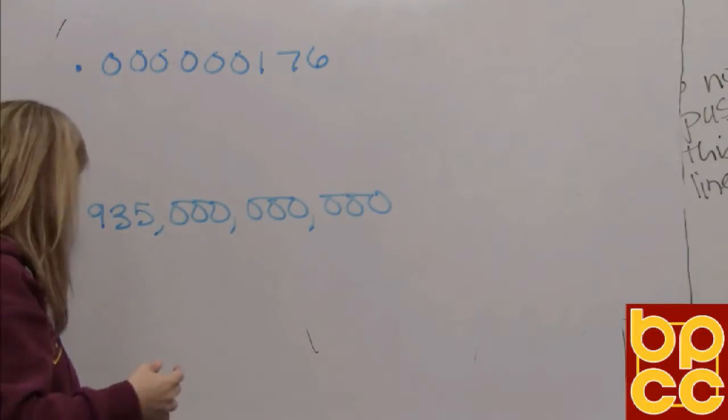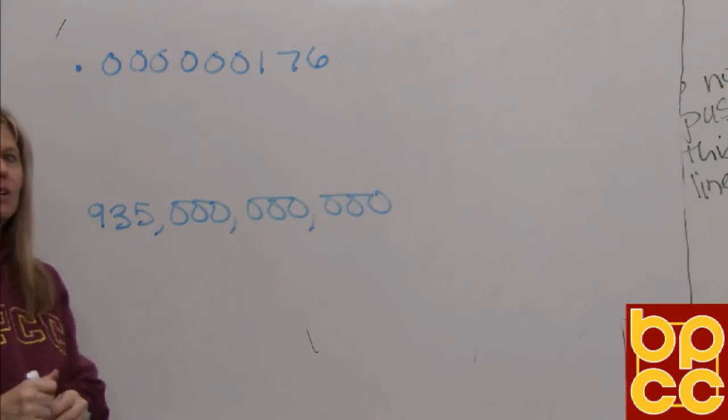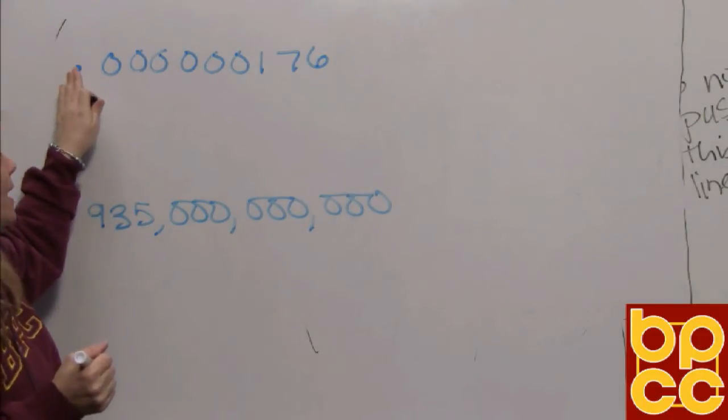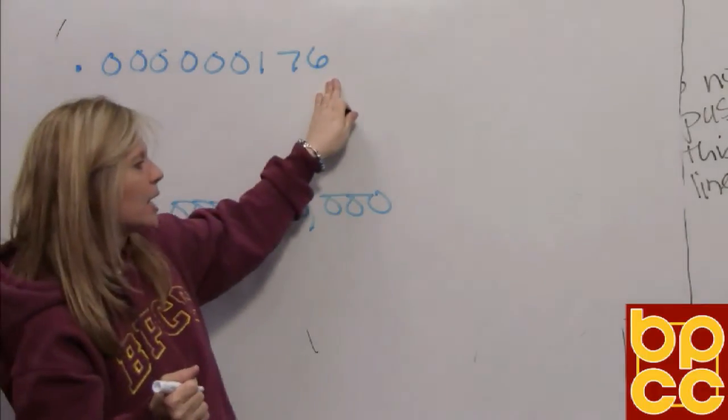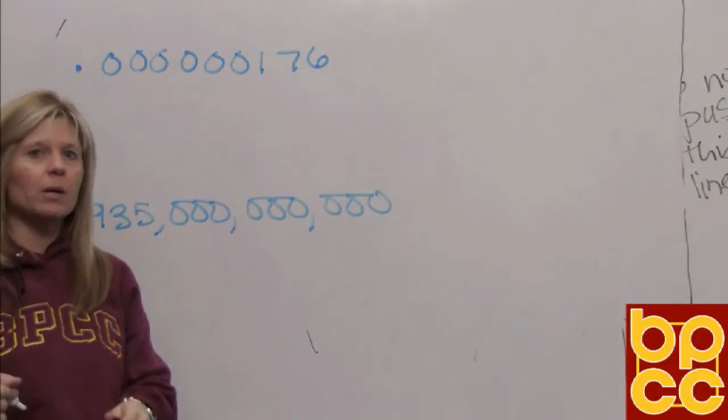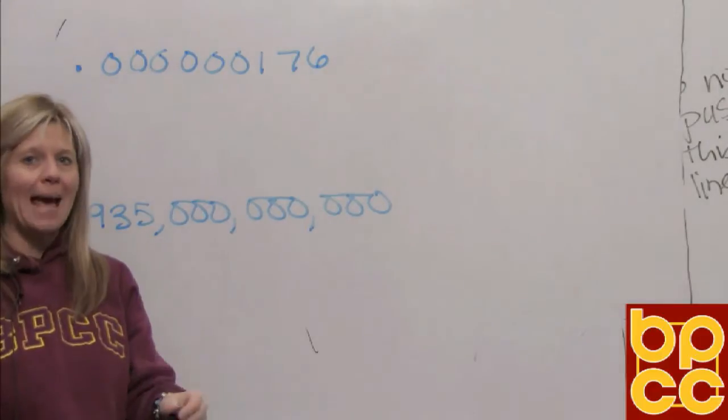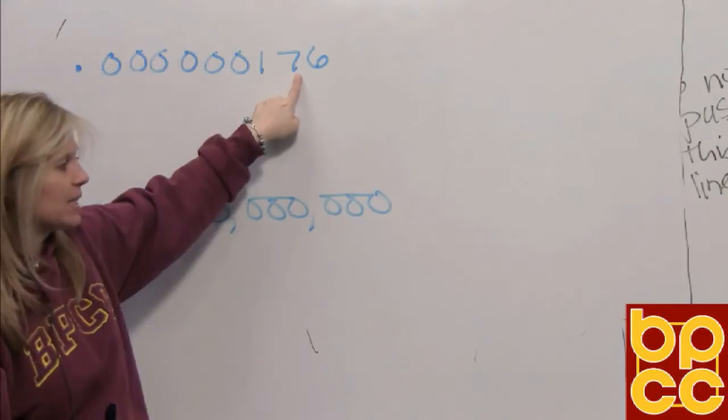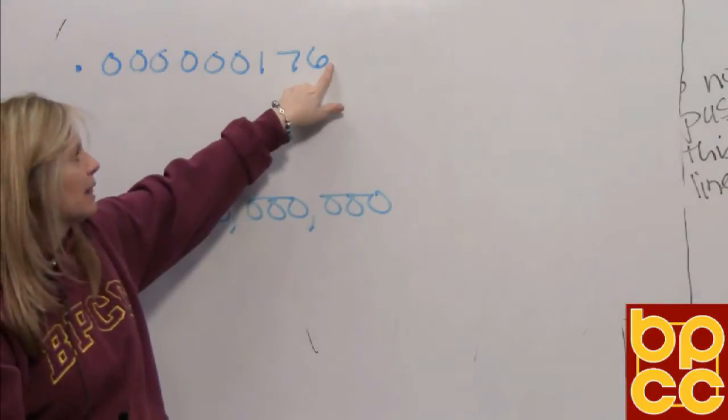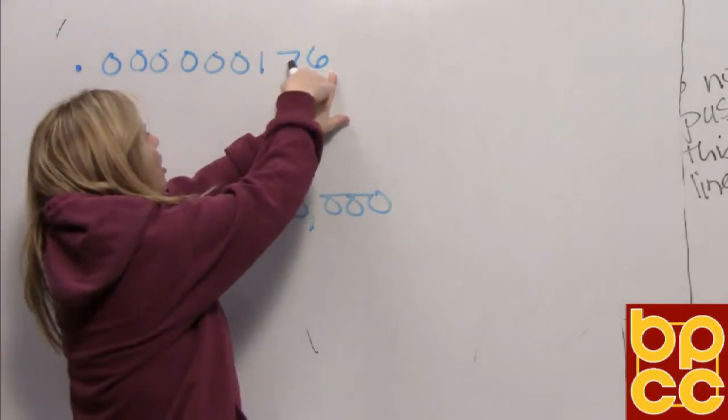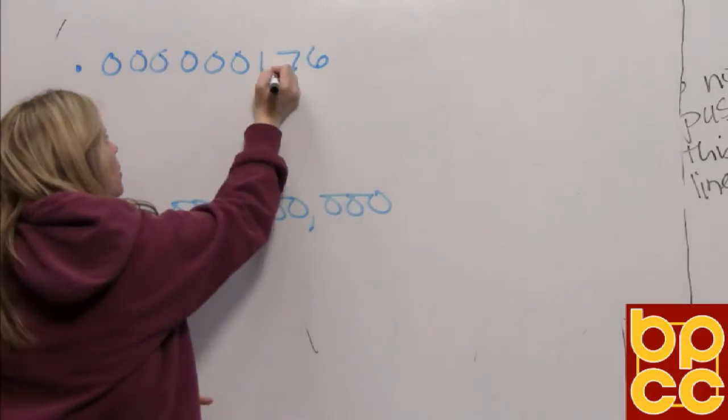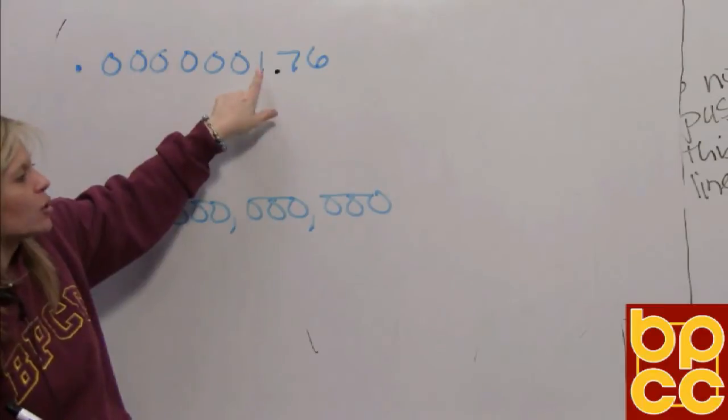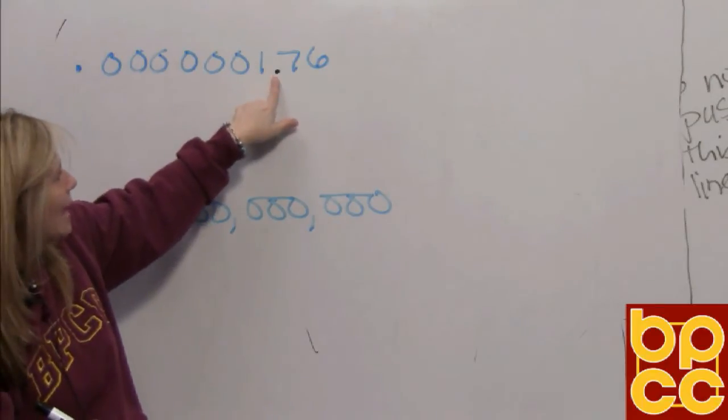So we're going to change this to scientific notation. The first thing you have to do is physically move the decimal point, and you want to put the decimal point somewhere in here that you would always form a number between one and ten. You don't want to put the decimal point there because that would be 17. You don't want to put it at the end because that would be 176. But if we put the decimal point here, we would have all zeros and then a one, so this would be a number one and seventy-six hundredths, which is between one and ten.